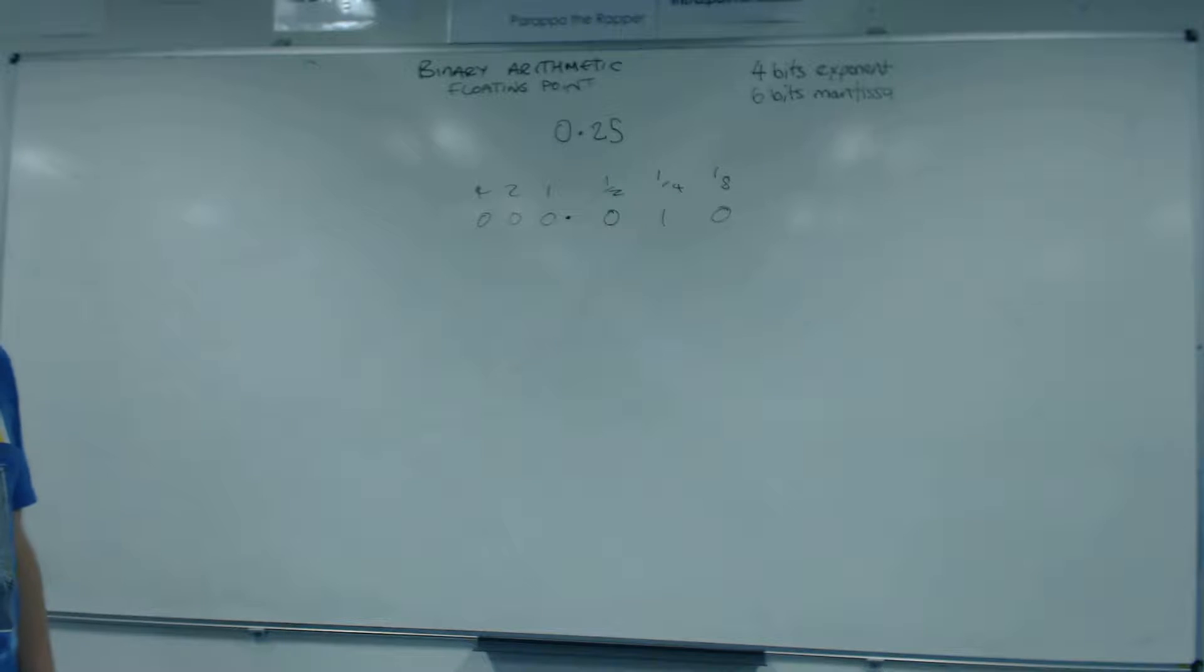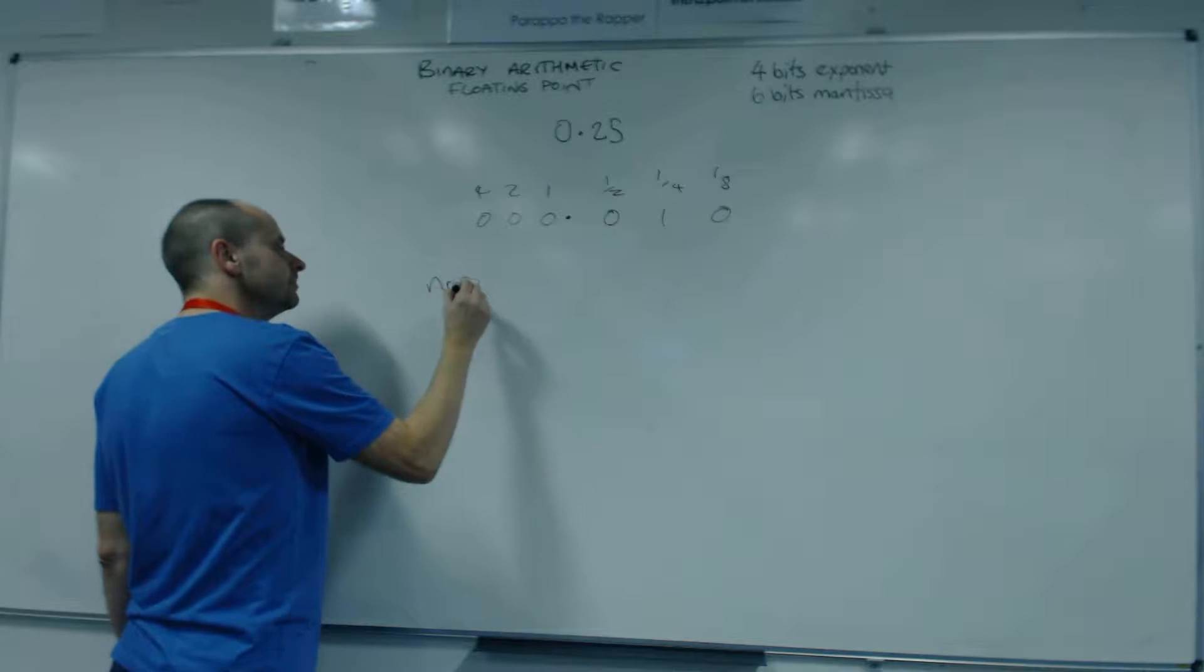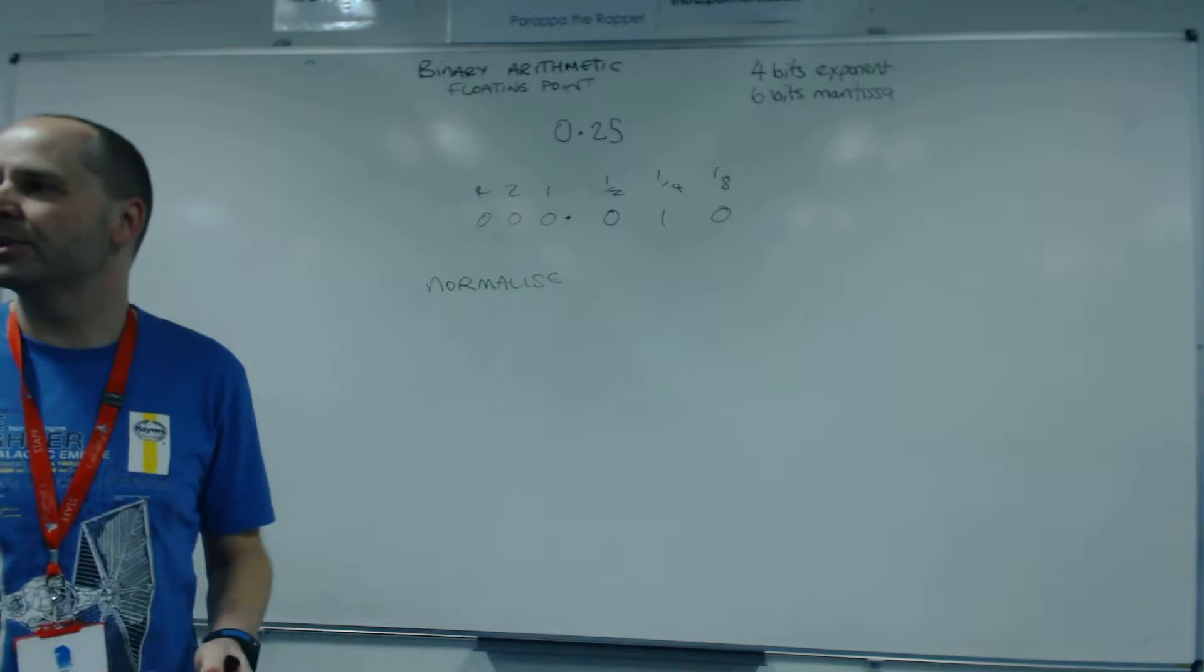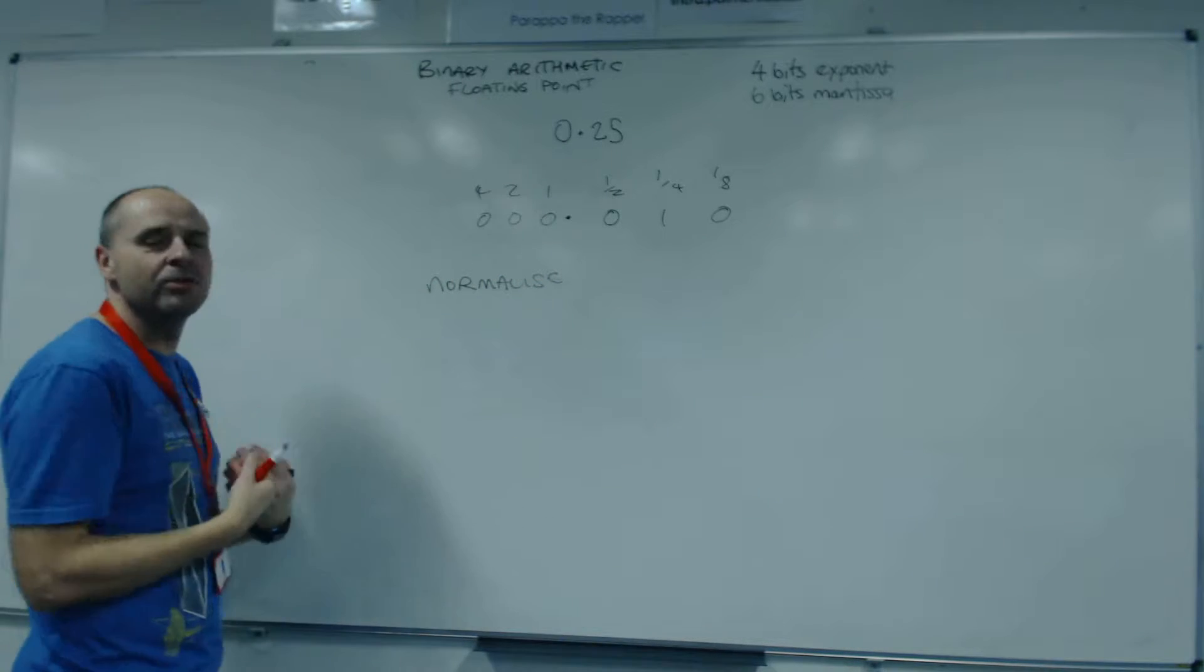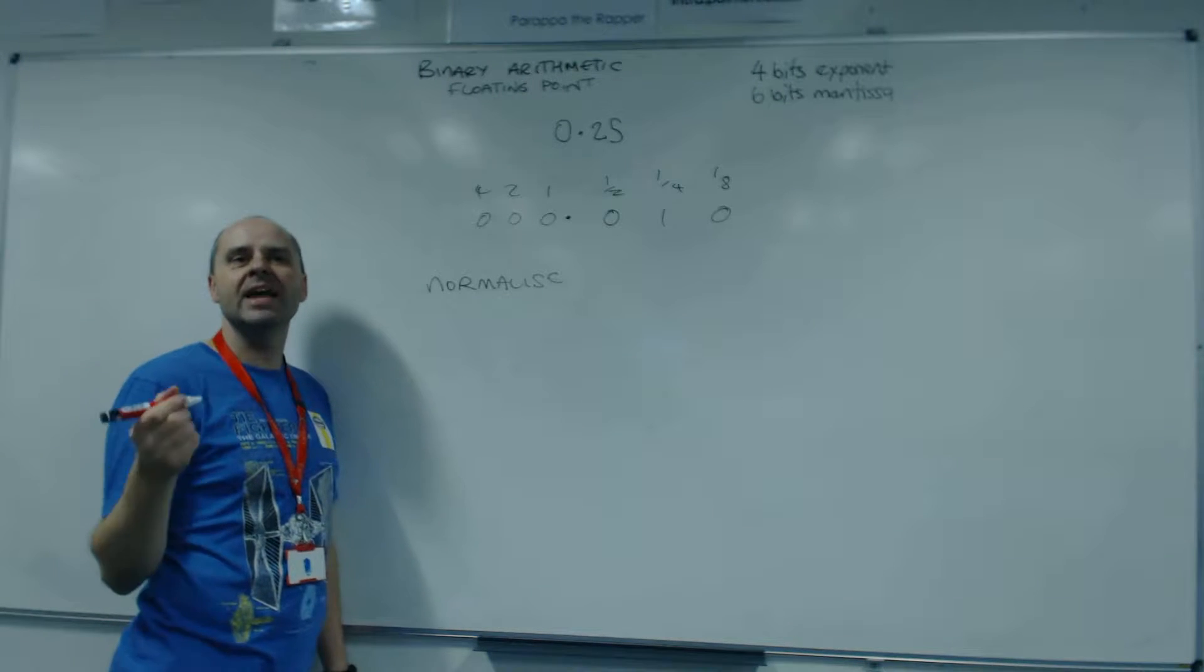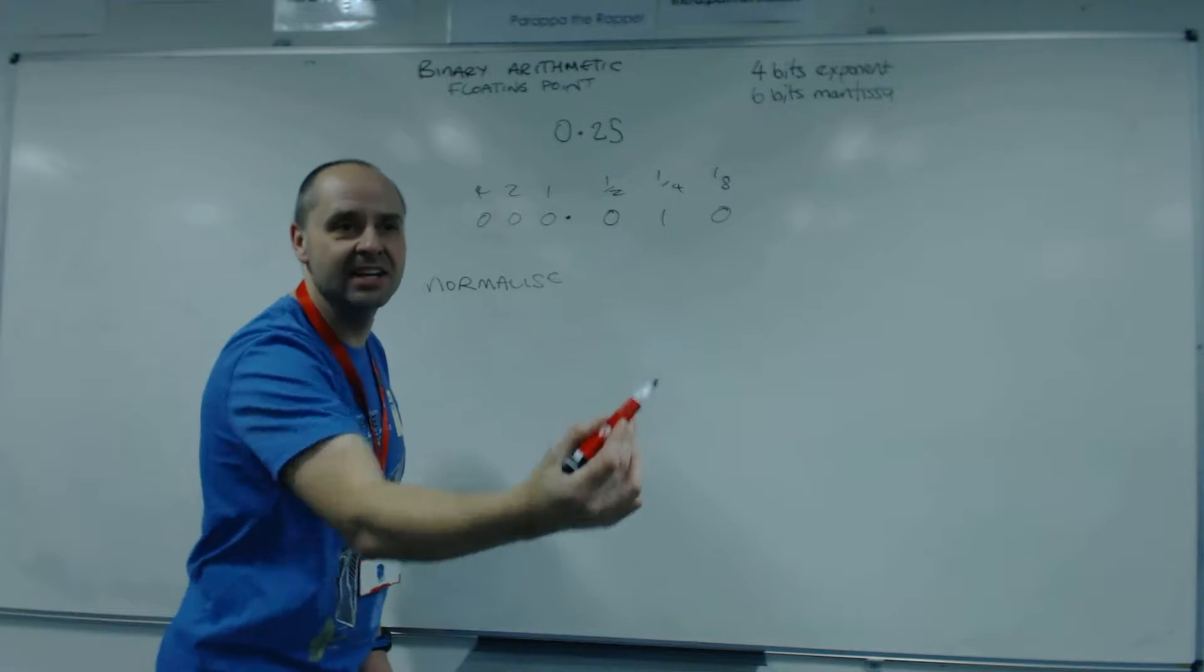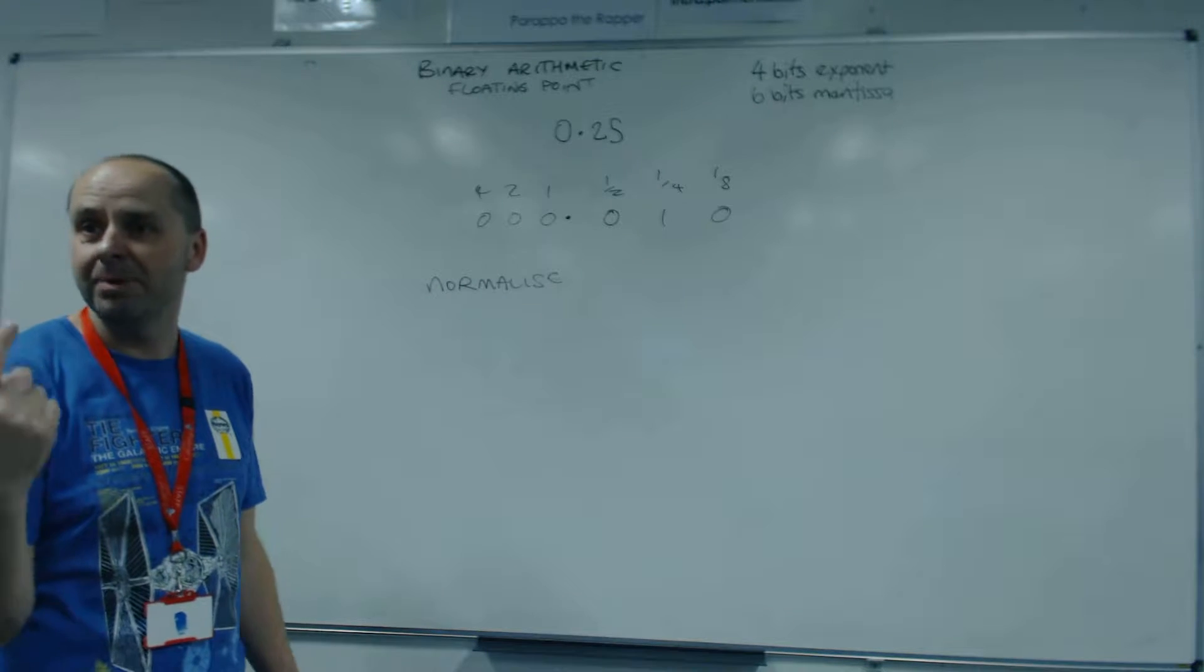Okay, what we want to do is we want to normalise. So whenever we're holding floating point values, we want to maximise the precision, because we've only got so many bits for the detail. And we do that by making sure that following the sign bit, we have a one. So we move the binary point so that we go sign bit, and then the detail of the number. The first one in a positive number will be a significant bit.